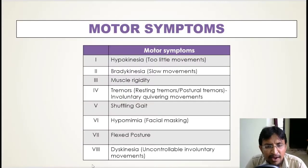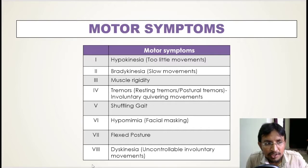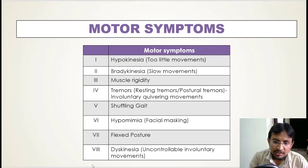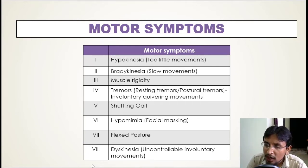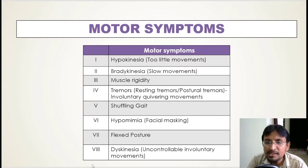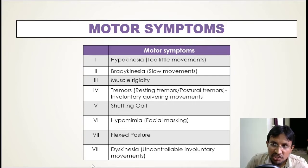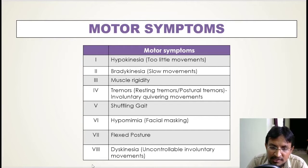The next Parkinson's disease symptom is hypomimia, also known as facial masking. This means that patients experience loss or reduction of facial expressions. It is a common symptom of Parkinson's disease, characterized by slower and less pronounced facial movements.